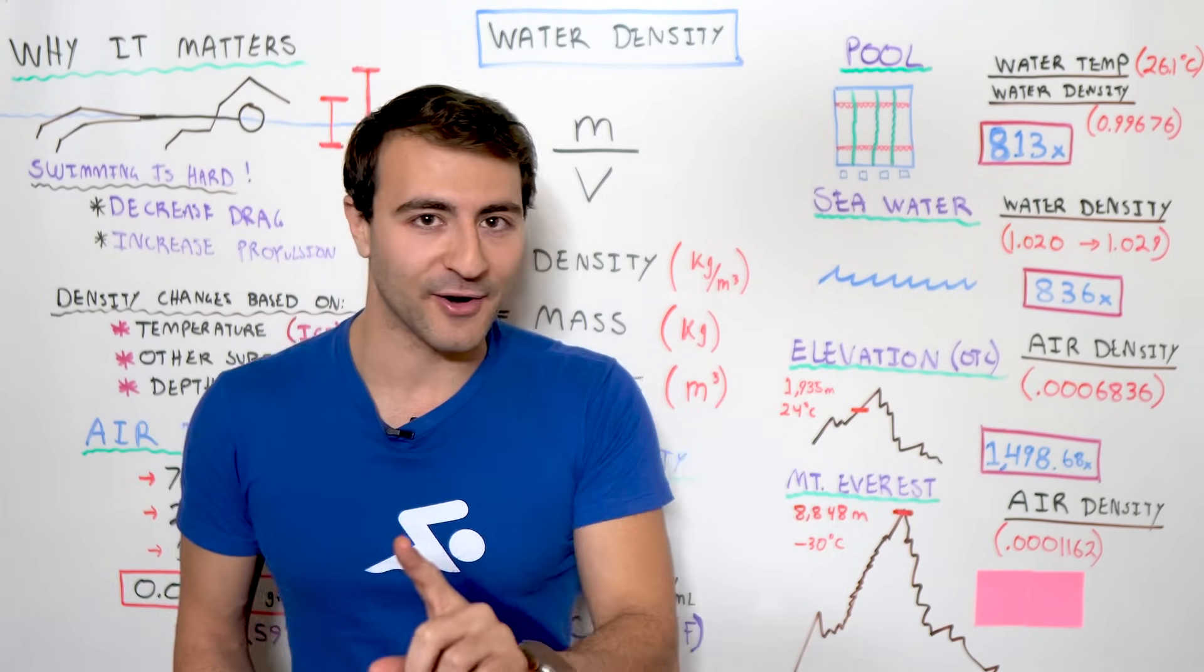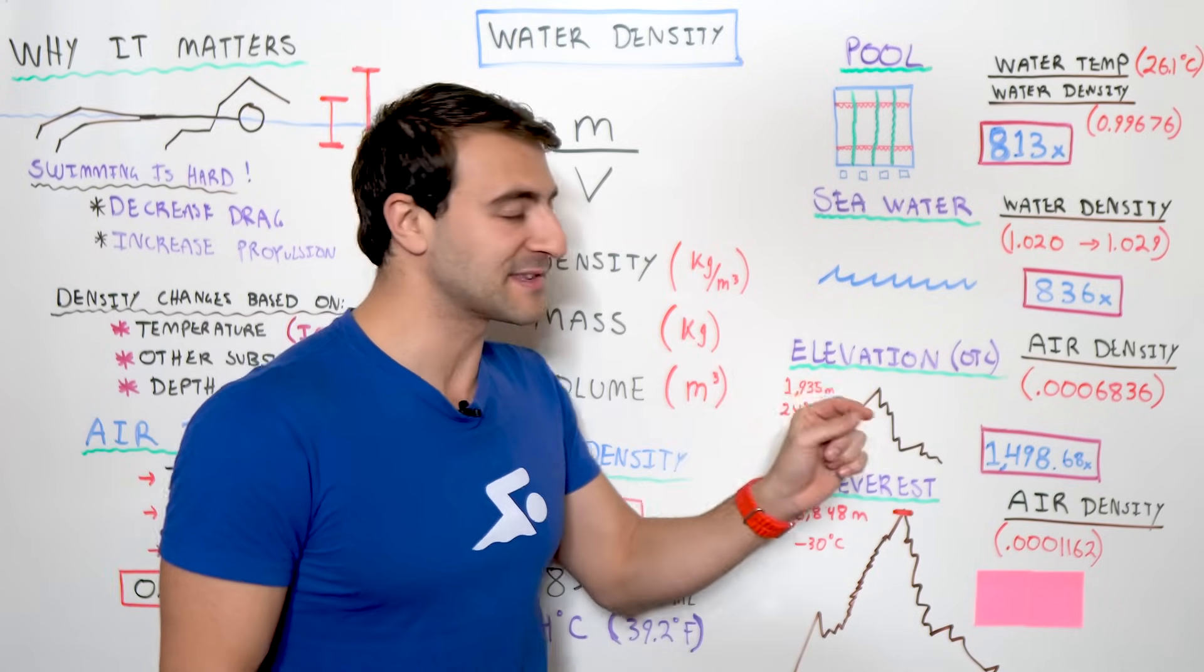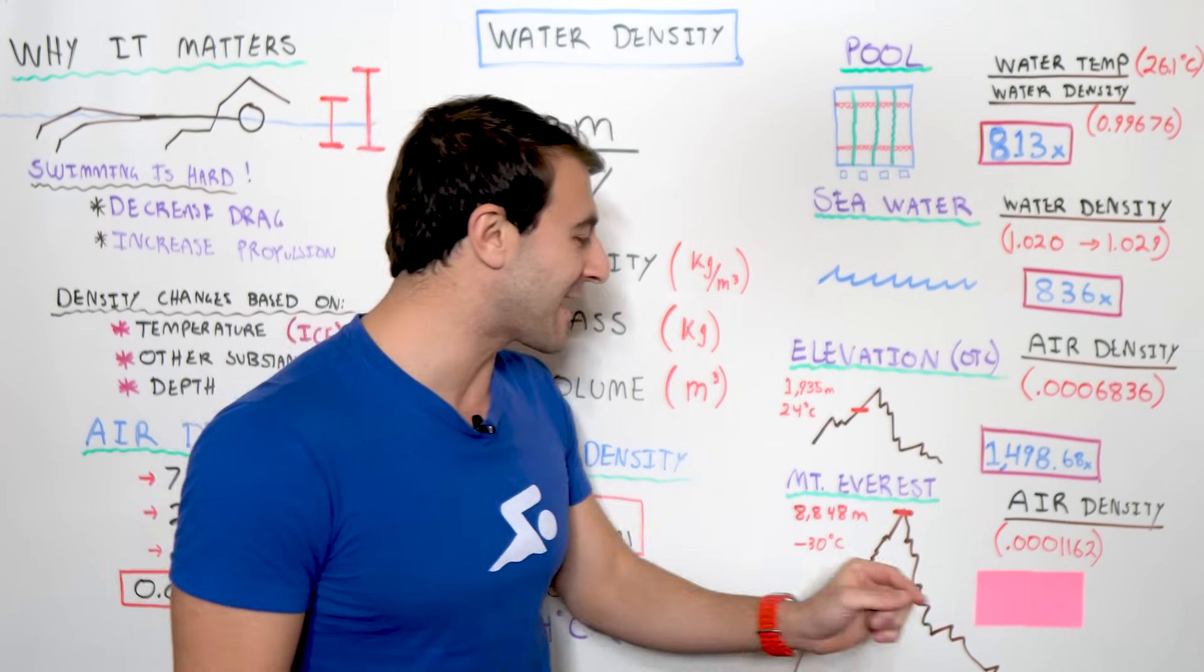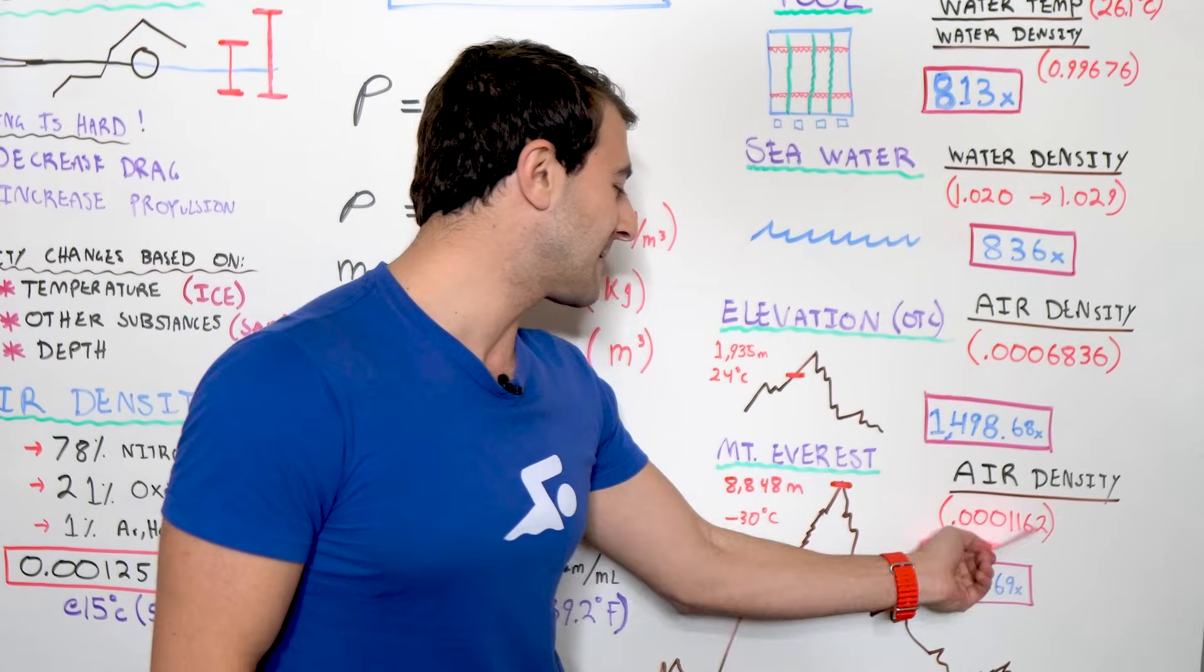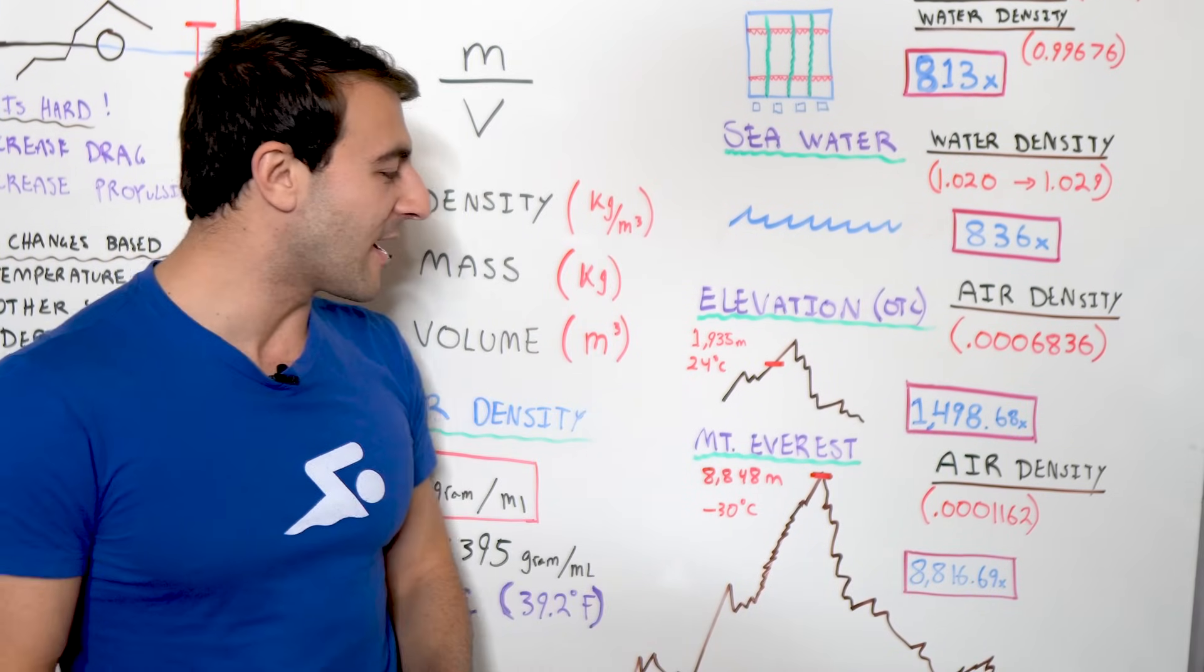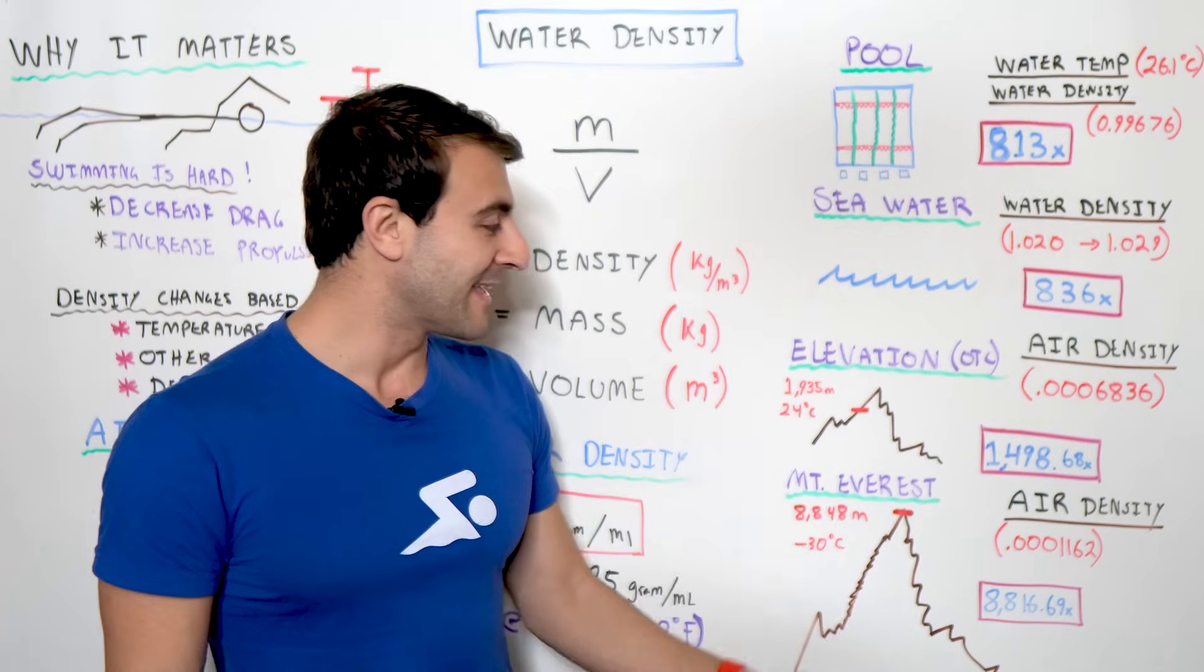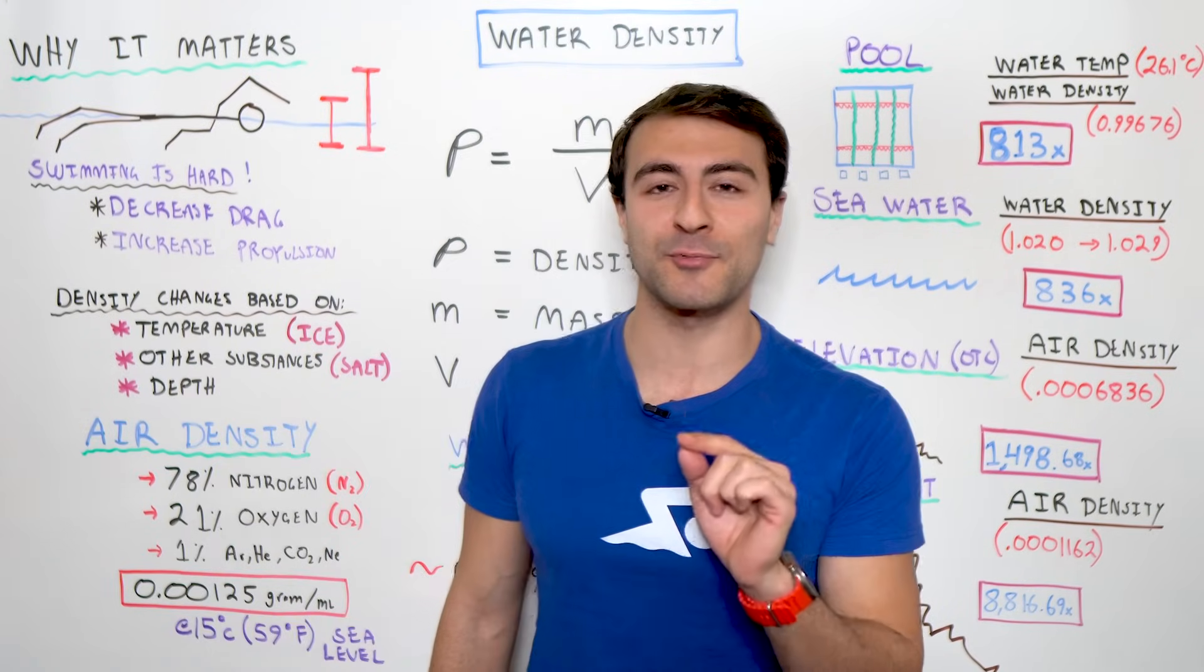So, the density of water at the top of Mount Everest, imagine a swimming pool at the top of Mount Everest. The density of water at the top of Mount Everest is 8,816 times more dense than air. That's pretty insane. Just imagine a swimming pool at the top.